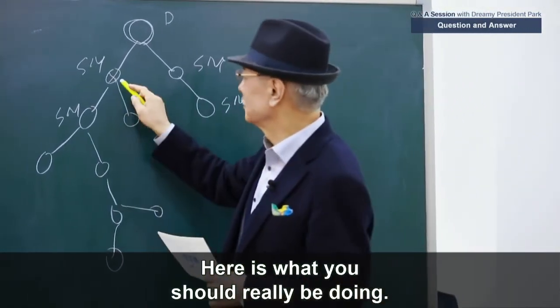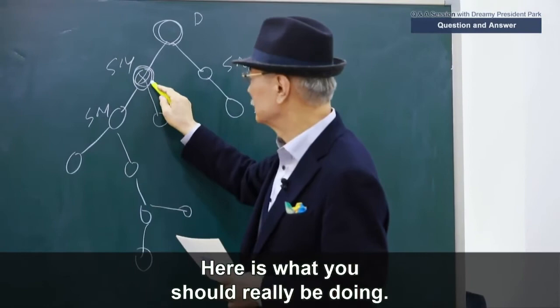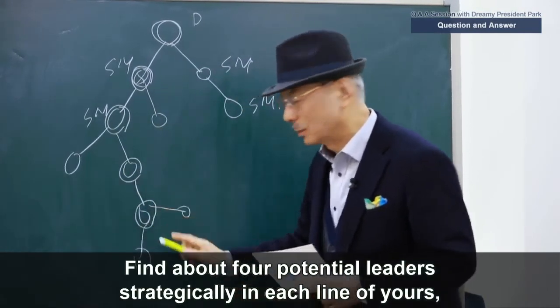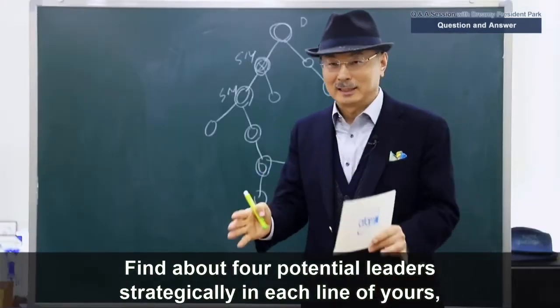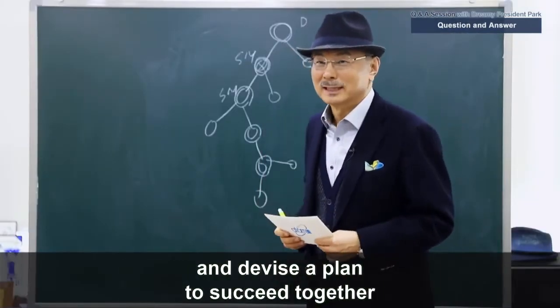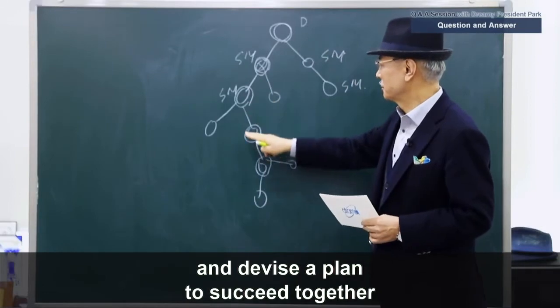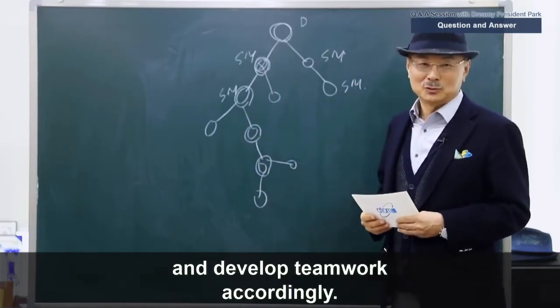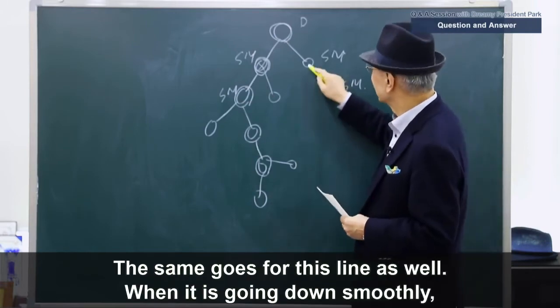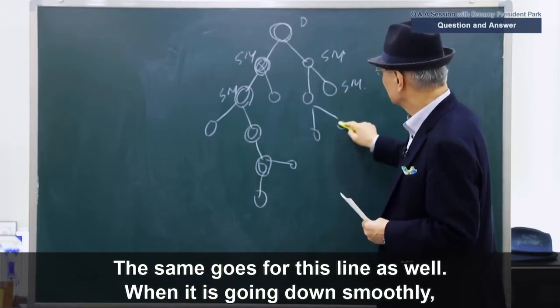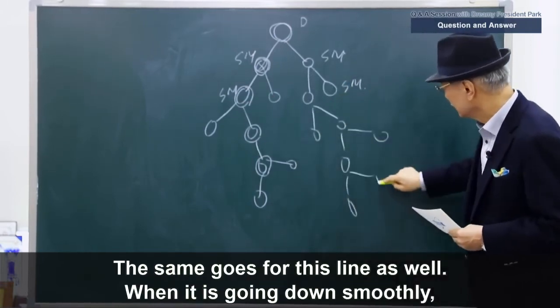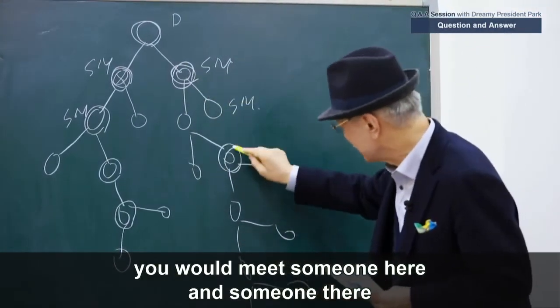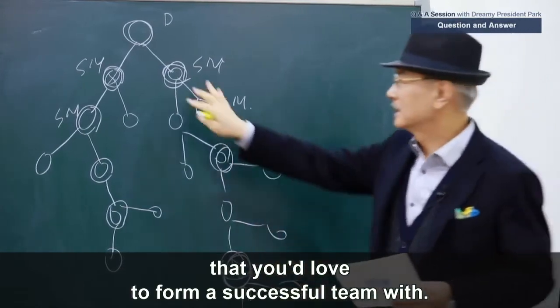Here is what you should really be doing. Find about four potential leaders strategically in each line of yours and devise a plan to succeed together and develop teamwork accordingly. The same goes for this line as well. When it is going down smoothly, you would meet someone here and you meet someone there that you'd love to form a successful team with.